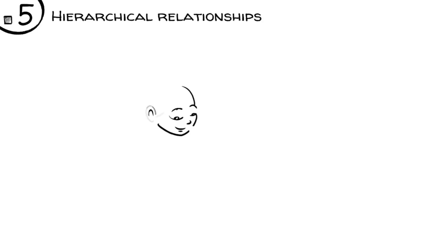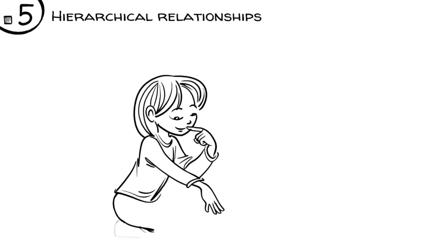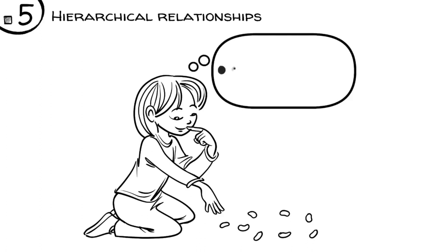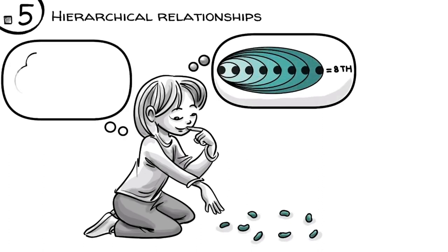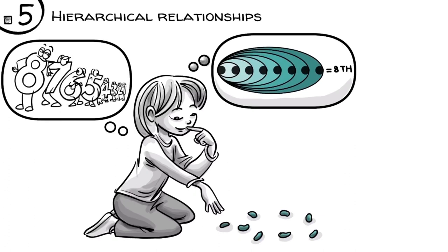Hierarchical relationships. As children construct order, they count the objects as follows. One, two, three, four, five, six, seven, and eight. As they do that, the number eight represents the eighth place in the order. In other words, eight always includes one, two, three, four, five, six, seven. The idea of eight is therefore a hierarchical relationship between the eighth object and all those preceding it.